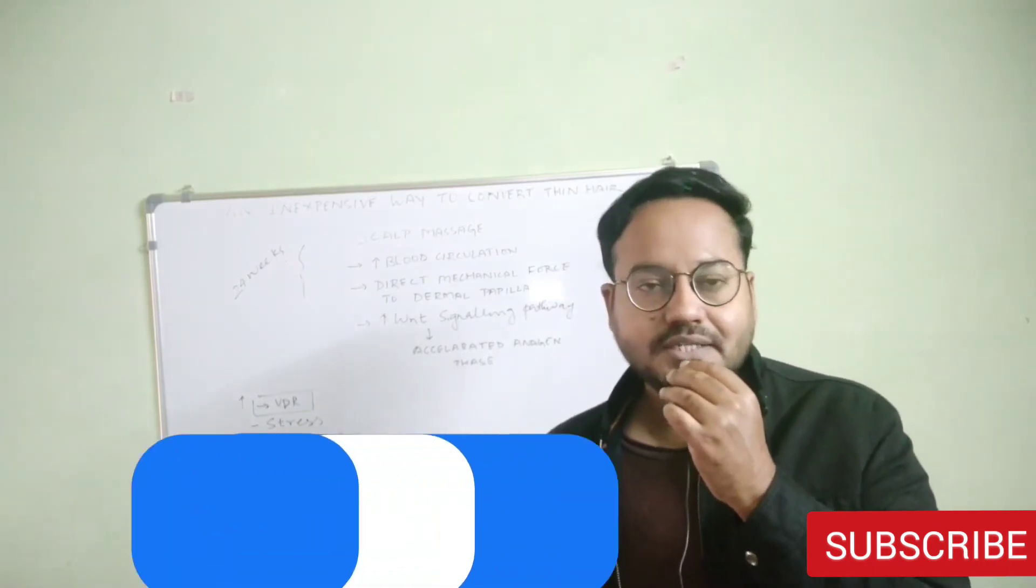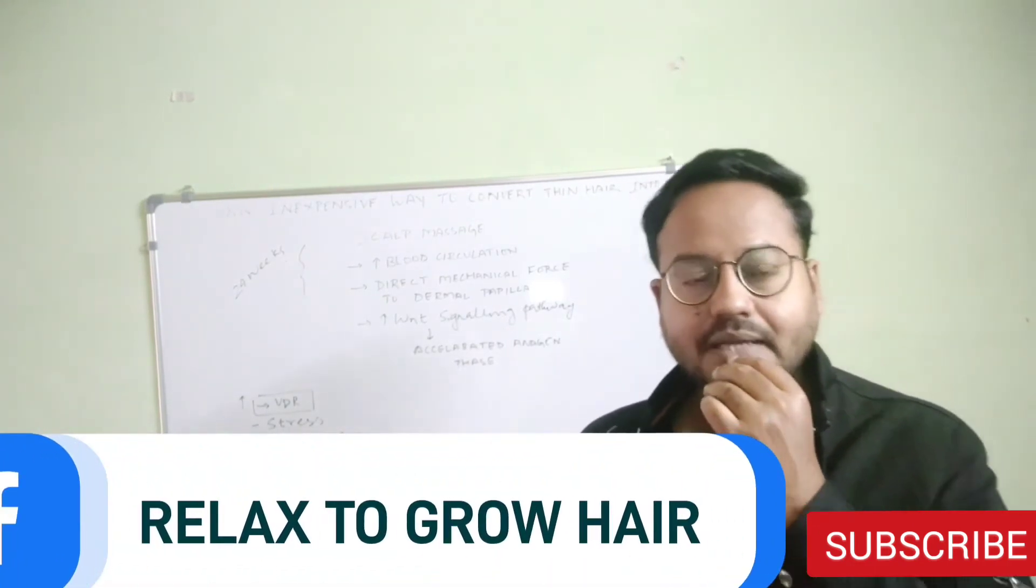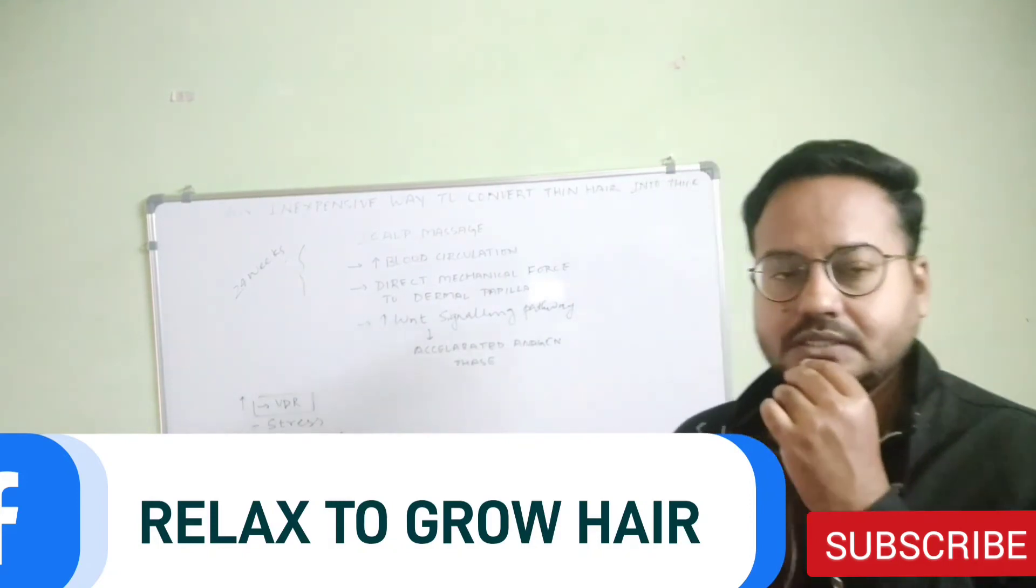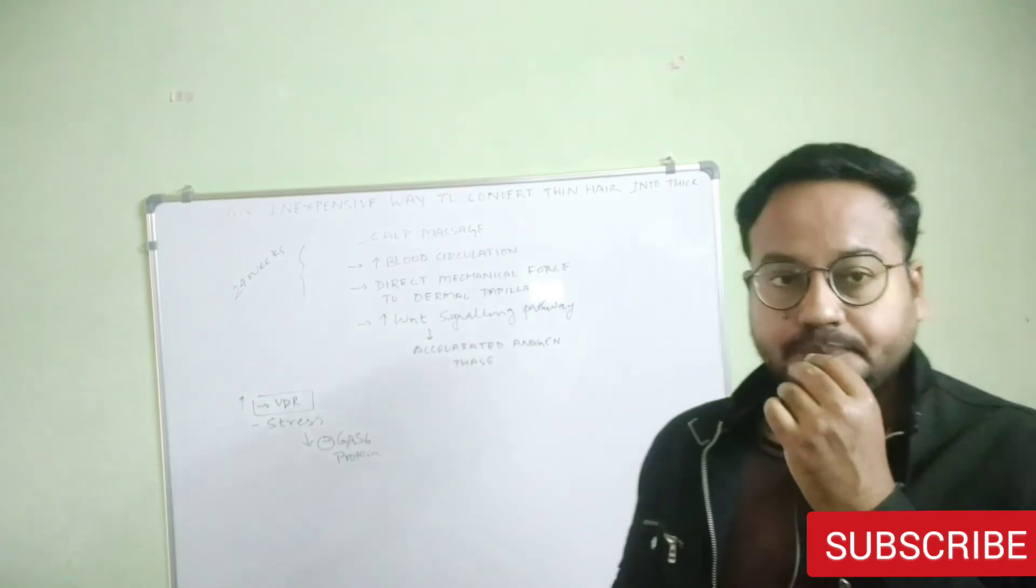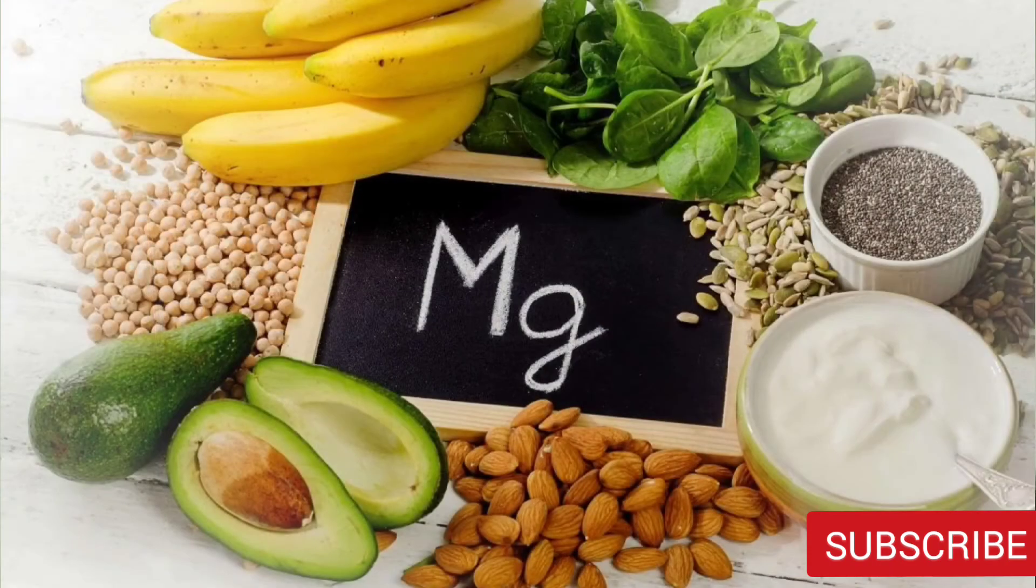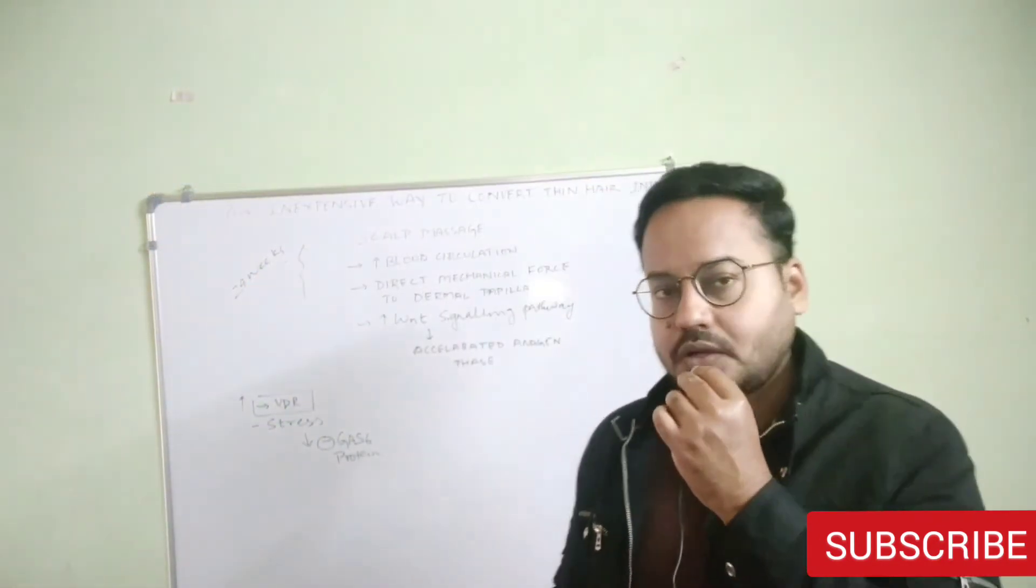One of the easiest ways to counteract stress is by getting enough magnesium in your diet. Magnesium is very crucial here. Magnesium not only counteracts stress, it also helps you get deep sleep, good quality sleep that's much needed to balance your cortisol hormones.